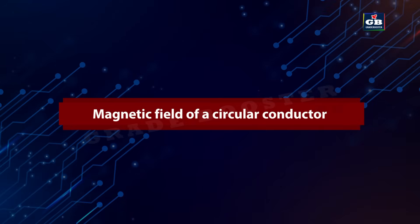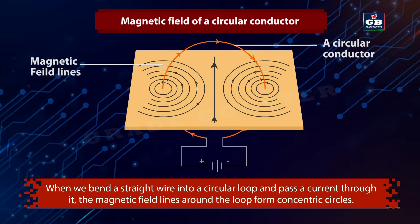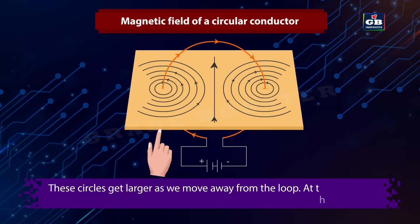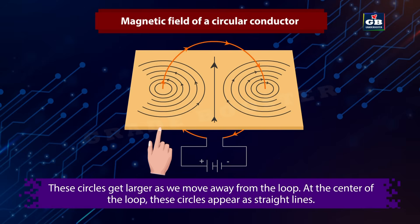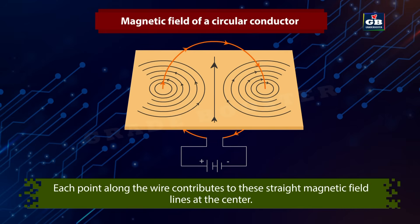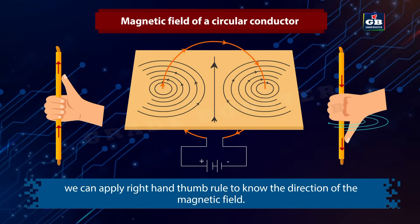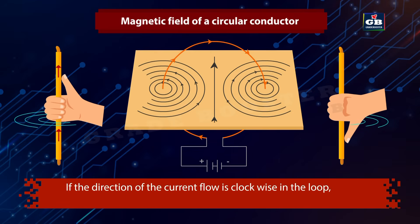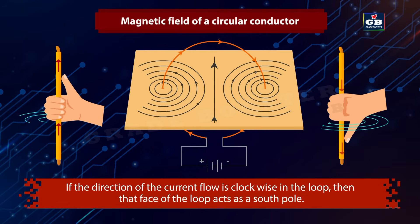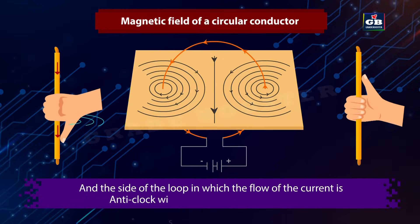Magnetic field in a circular conductor. When we bend a straight wire into a circular loop and pass a current through it, the magnetic field lines around the loop form concentric circles. These circles get larger as we move away from the loop. At the center of the loop, these circles appear as straight lines. Each point along the wire contributes to the straight magnetic field lines at the center. Using the right hand rule, all sections of the wire contribute to the magnetic field lines in the same direction within the loop. The side of the loop in which the flow of current is clockwise acts as the south pole, and the side in which the flow of current is anticlockwise acts as the north pole.